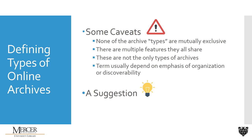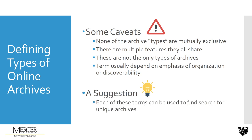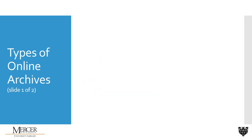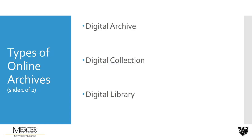This leads to my suggestion: if you are looking for an online archive in a search engine like Google, try using a variety of these search terms that we'll discuss. There might be multiple types of archives out there with primary source documents relevant to your specific history research. So now on to the types of online archives — we're actually going to look at six, in no particular order. First up we have digital archive, digital collection, and digital library.